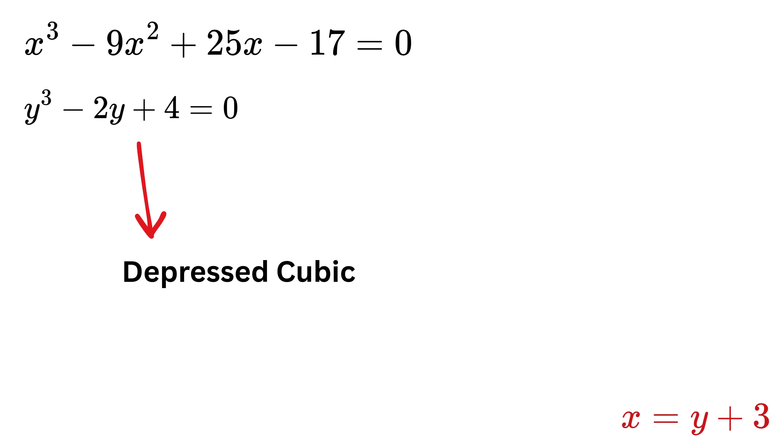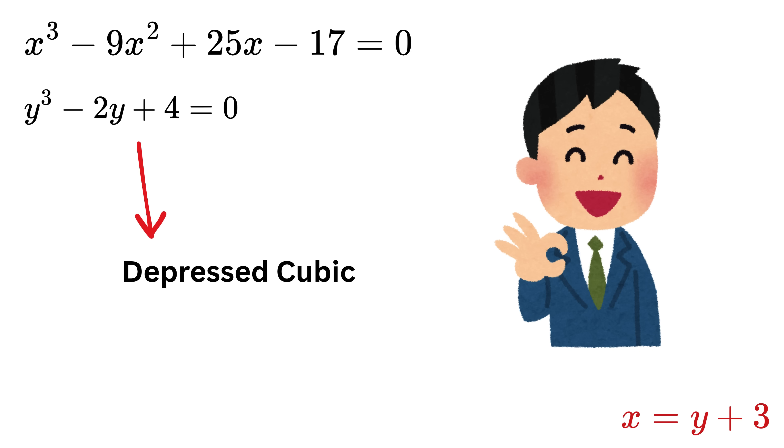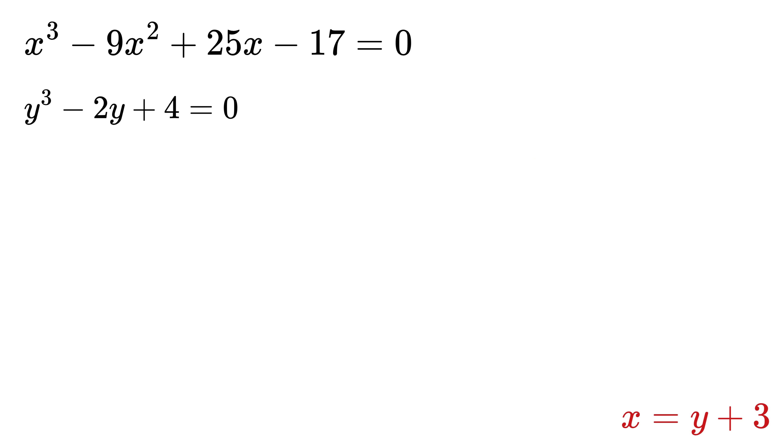This is called the depressed cubic, which is a cleaner, simpler version of our original equation with no square term. Amazing! So here comes the magic. Suppose we generalize this depressed form as y³ + py + q = 0. So here, in our case, p is -2 and q is 4.